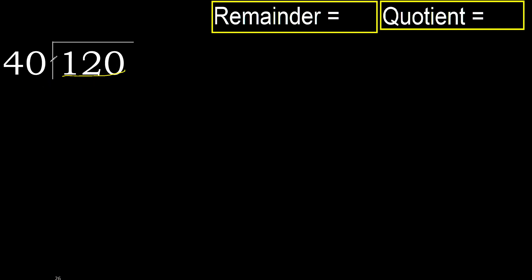Therefore, with 120, 40 multiplied by which number is nearest to 120 but not greater? 40 multiplied by 4 is 160, which is greater. Multiply by 3 — 120 is not greater.